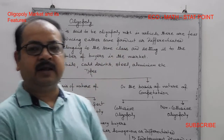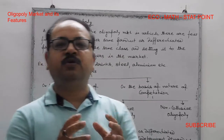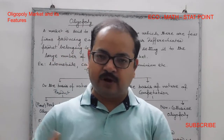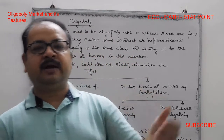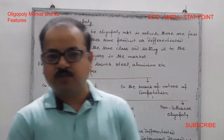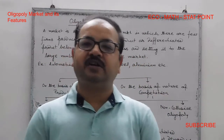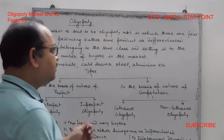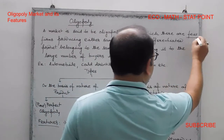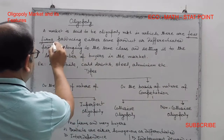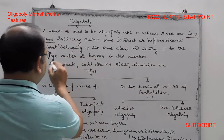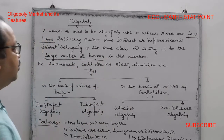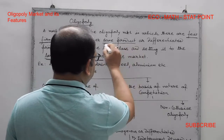In the oligopoly market, few firms sell to a large number of buyers. The industry also has a large number of buyers, and firms produce either the same product or a differentiated product.